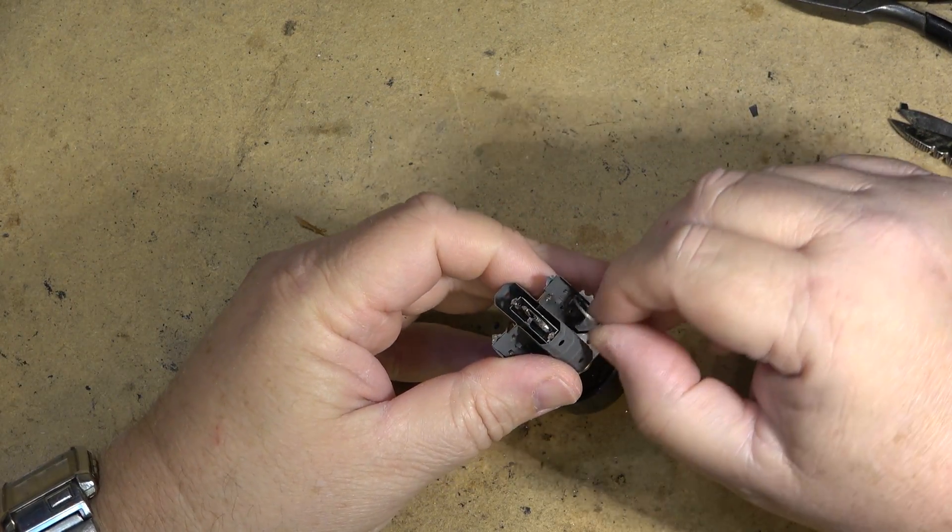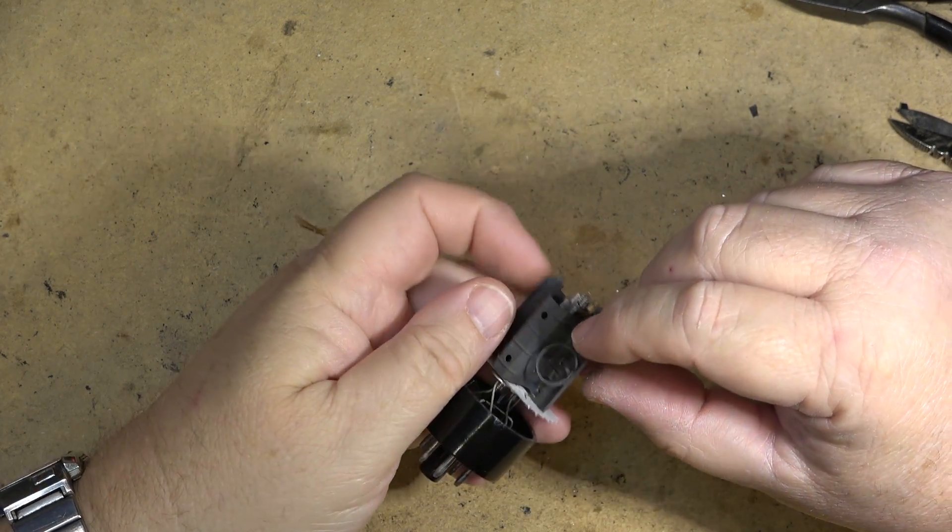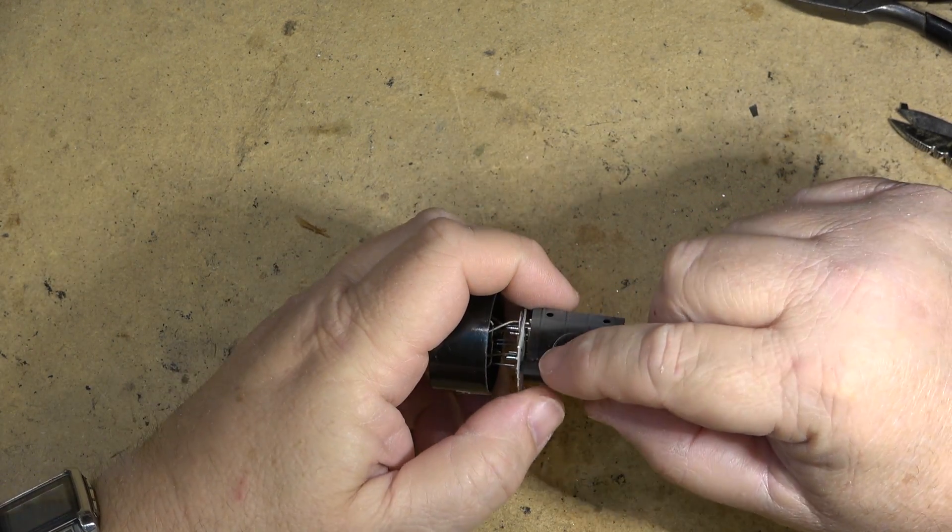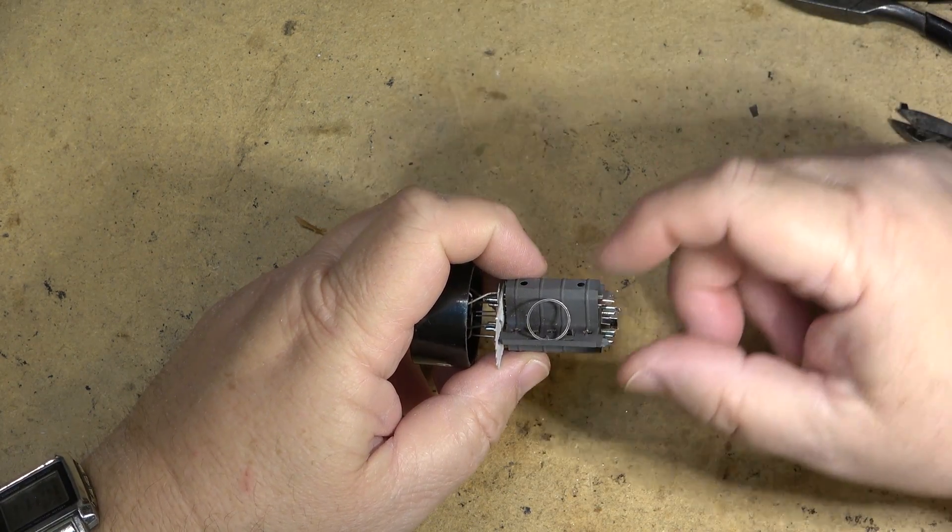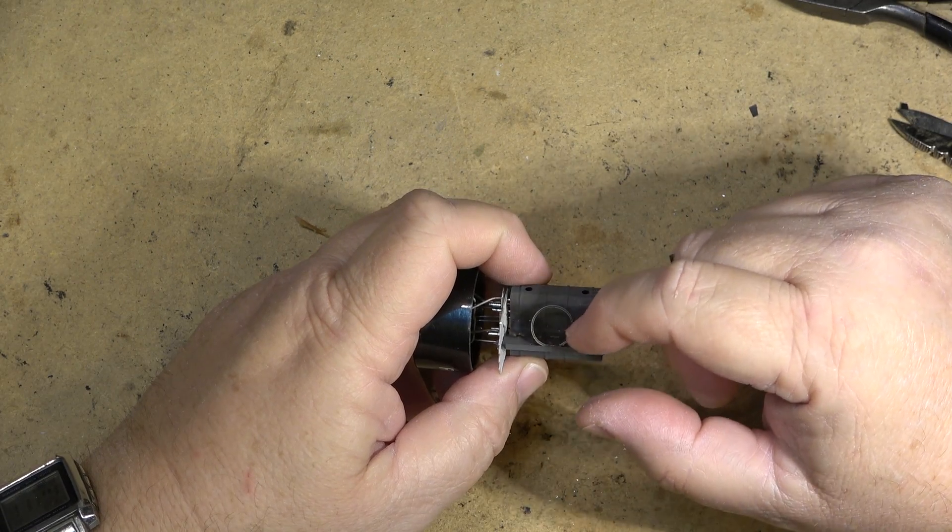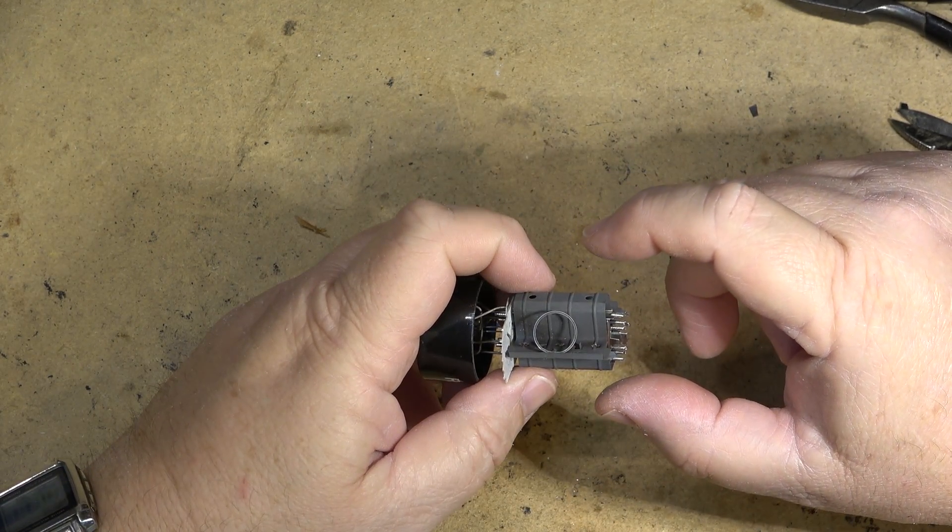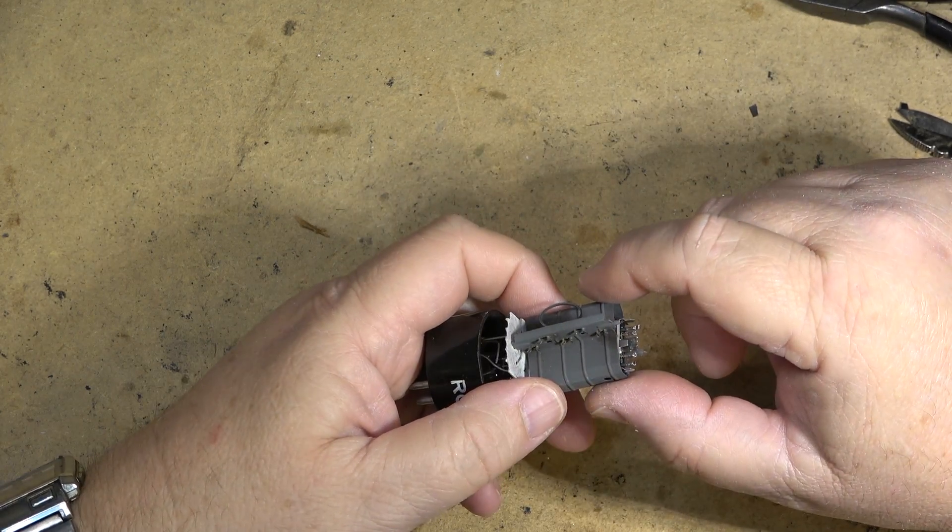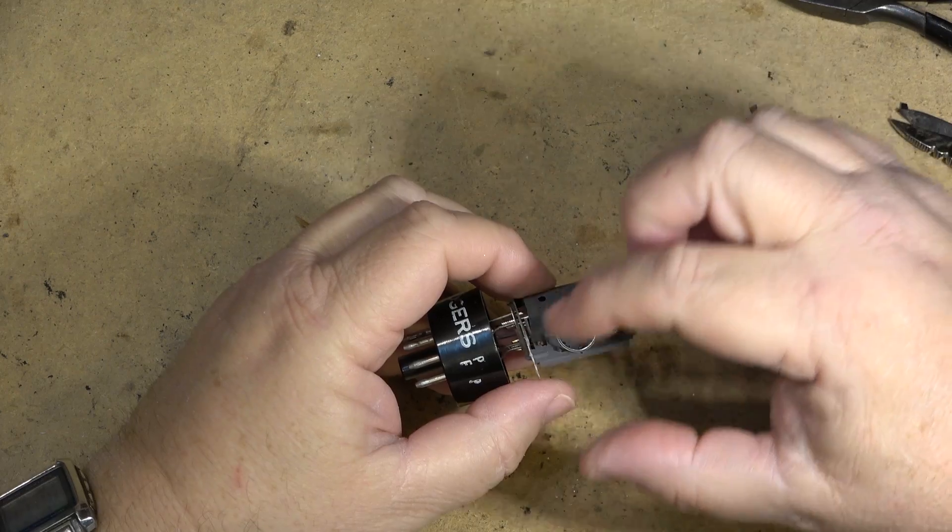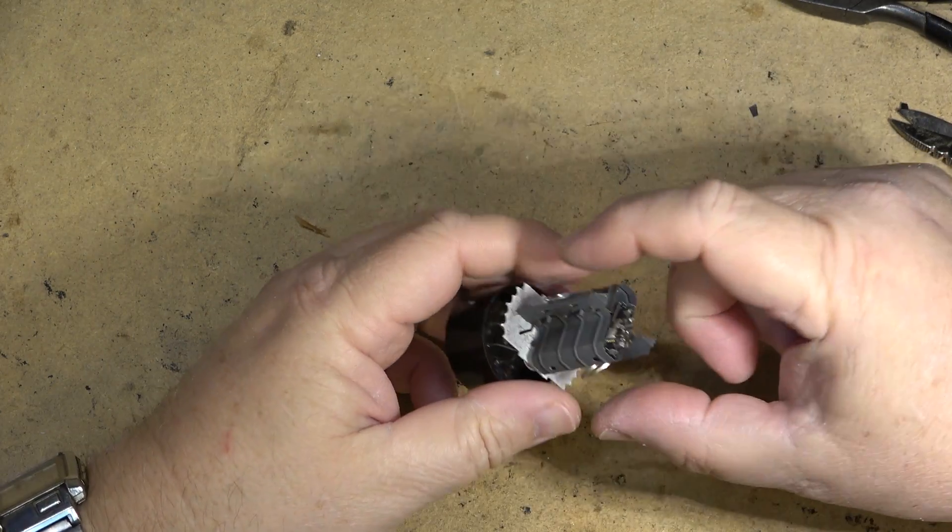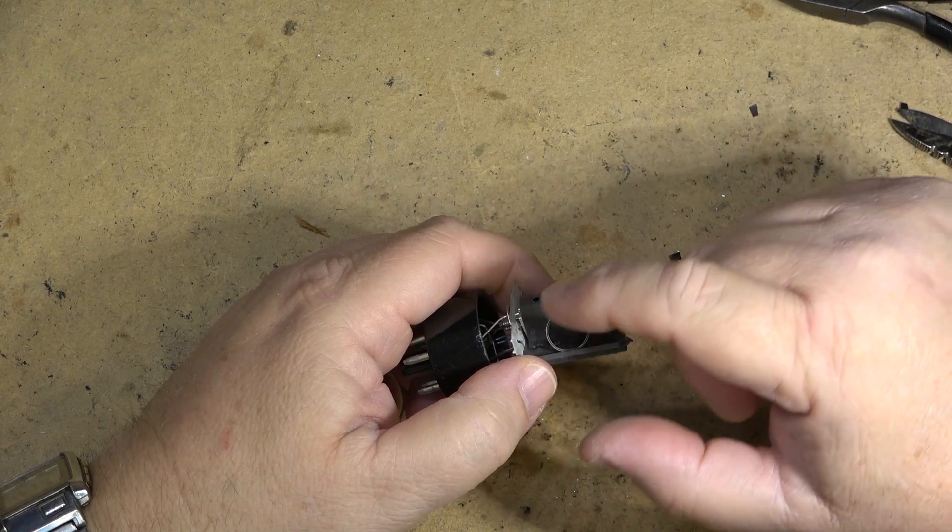These rings that you see here are called the getters. So what the getter was, was it was a chemical that was applied in here. Once the tube was evacuated, they used an induction heater to heat the getter up and cause it to burn and flash the getter, as it was called. What that would do is burn up any residual oxygen that was remaining in the tube. That's what caused the silver dome on top of the tube or on the side. That was the deposits from the getter attaching to the glass.